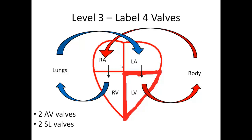Now we're going to talk about the four valves. As noted, you have two AV valves and two SL valves. AV stands for atrioventricular — they're located between the atrium and the ventricle on each side. SL are the semilunars, and those are going to be the ones leaving from the ventricles going out through their respective great vessels. The AV valves, highlighted in purple, are the right on the right and the left on the left.